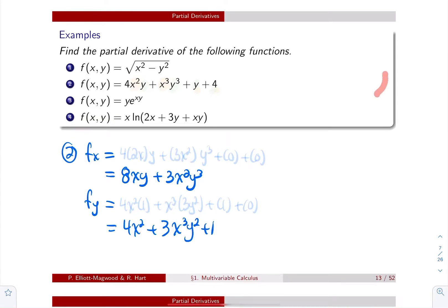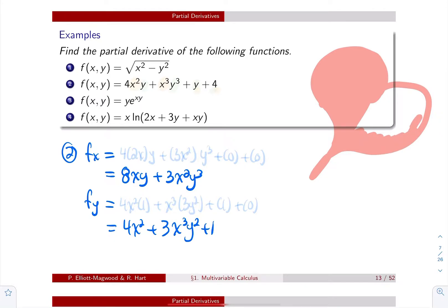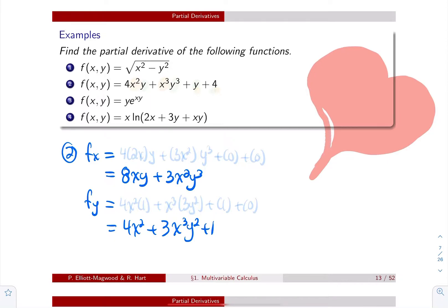Here we go with more examples. Let's compute the partial derivatives of the following functions. I'm going to start with the second one since it's the easiest. So let's look at f(x,y) = 4x²y + x³y³ + y + 4. If I look at my x terms, I have x, x squared, x cubed, and then nothing and nothing.